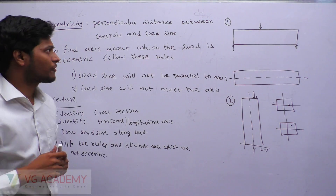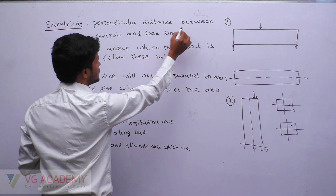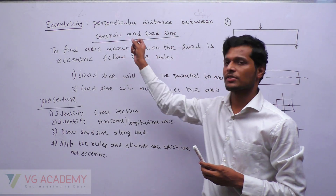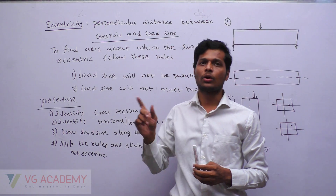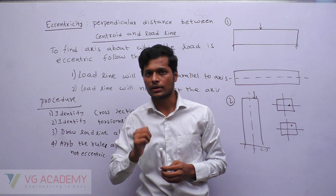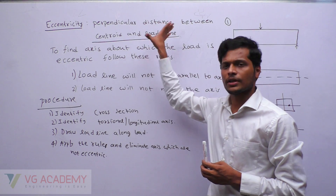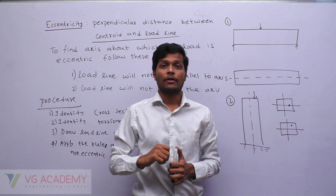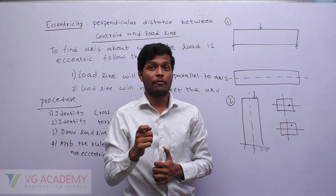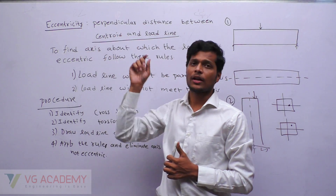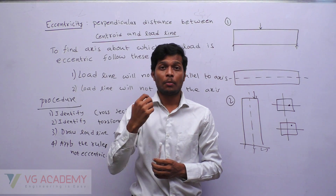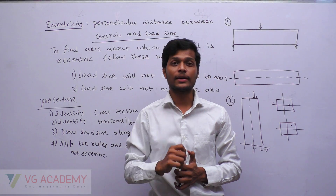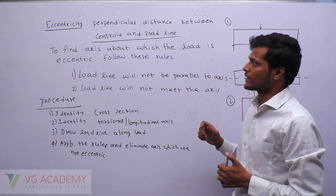The definition of eccentricity is the perpendicular distance between the centroid and the load line. The centroid is the centroid of the section, and the load line means the line extended along the load. This definition everyone knows, but it will not give clarity about which axis the load is eccentric about. We know the value of eccentricity is E, but about which axis it is eccentric we do not know.